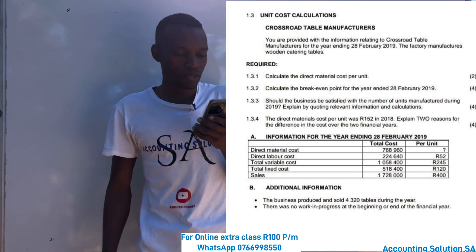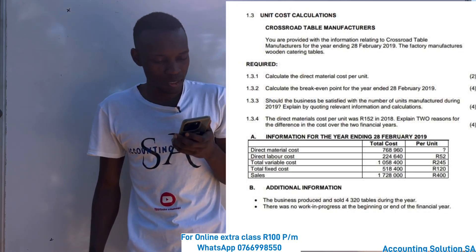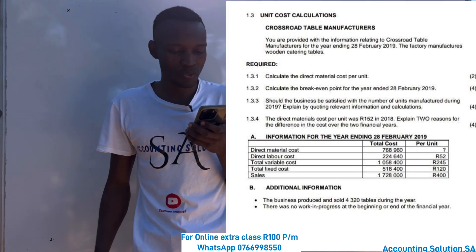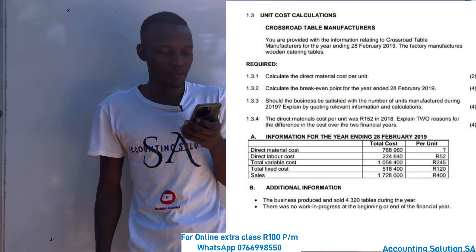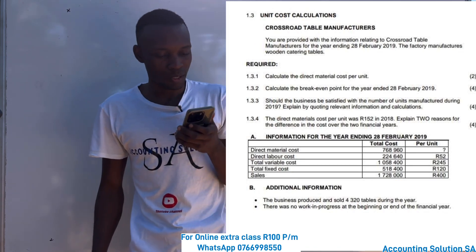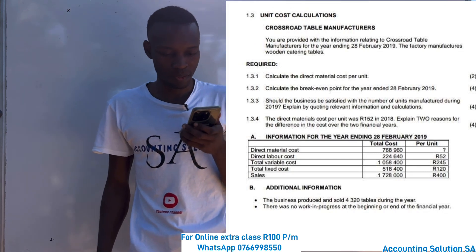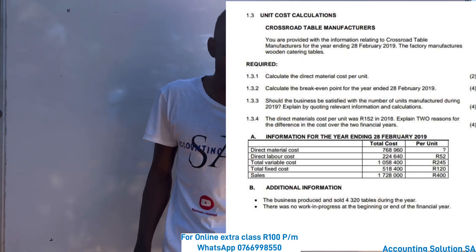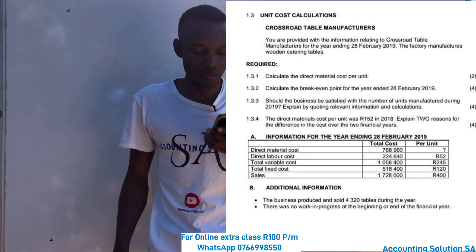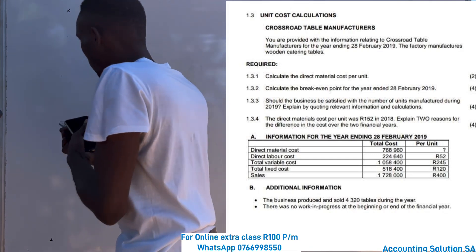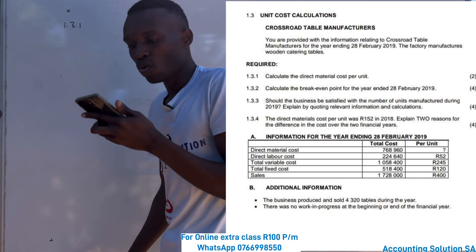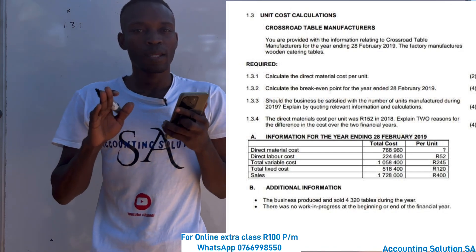Let's look at this question paper — unit cost calculation. They say that Crossroad Table Manufacture: you are provided with the information related to Crossroad Table Manufacture for the year ending 28 February 2019. The factory manufactures wooden catering tables. Question 3.1.1: calculate the direct material cost per unit for two marks. 3.1.2: calculate the break-even point for the year ending 28 February — you must know the formula of break-even point.